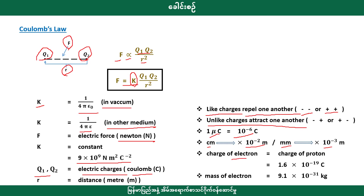What is an electron? The charge of an electron is 1.6 × 10⁻¹⁹ Coulombs. The mass of electrons is 9.1 × 10⁻³¹ kilograms.